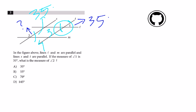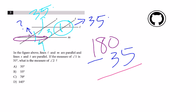Now, if we look at this line right here, we figure out that the whole entire line must equal 180 degrees. So if we subtract 35 degrees from 180, we get the measure of angle two. So 180 minus 35 equals 145, which is answer choice D.